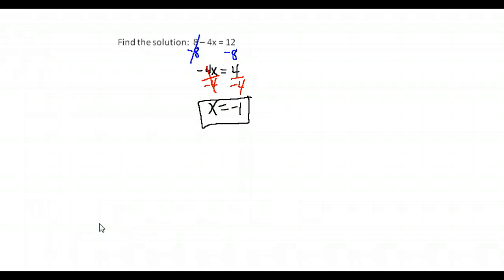Now you can always check your answers to make sure they're the correct answer by plugging them back into the equation. For this one, it would look like this. We had 8 minus 4x equals 12. We want to know if we have the correct answer. We said that x was negative 1. So we would replace the x with a negative 1 and check to see if it makes the equation true or not.